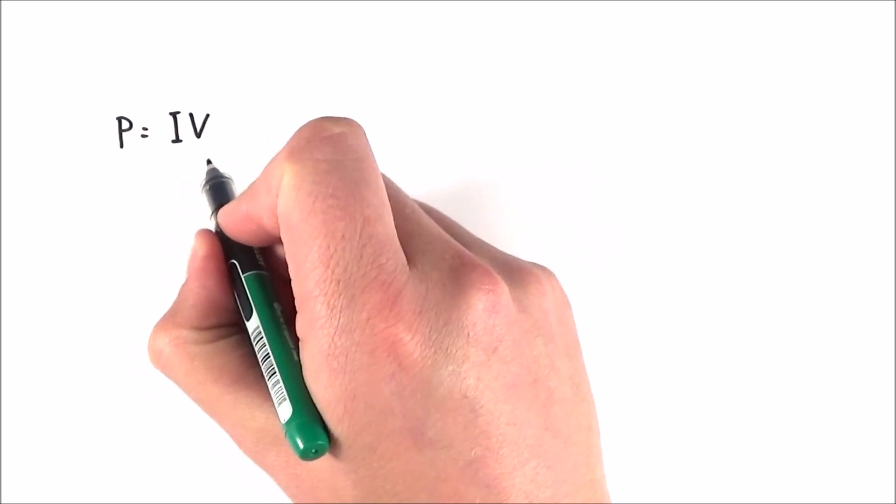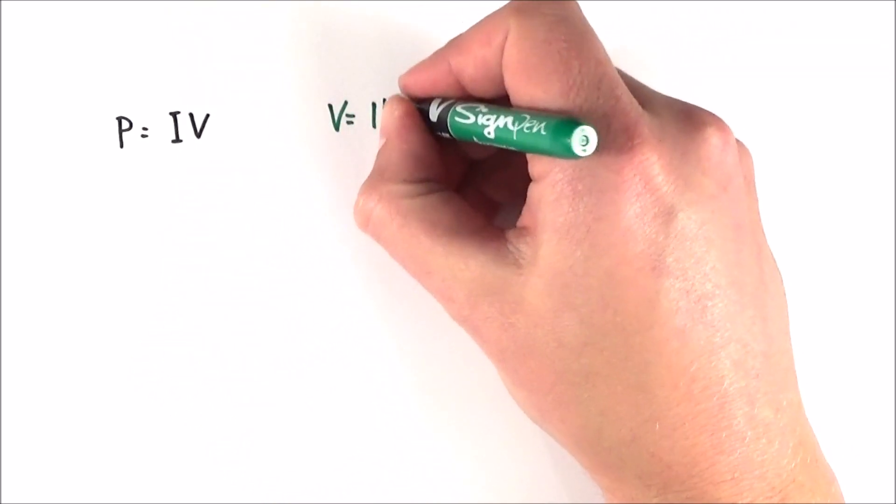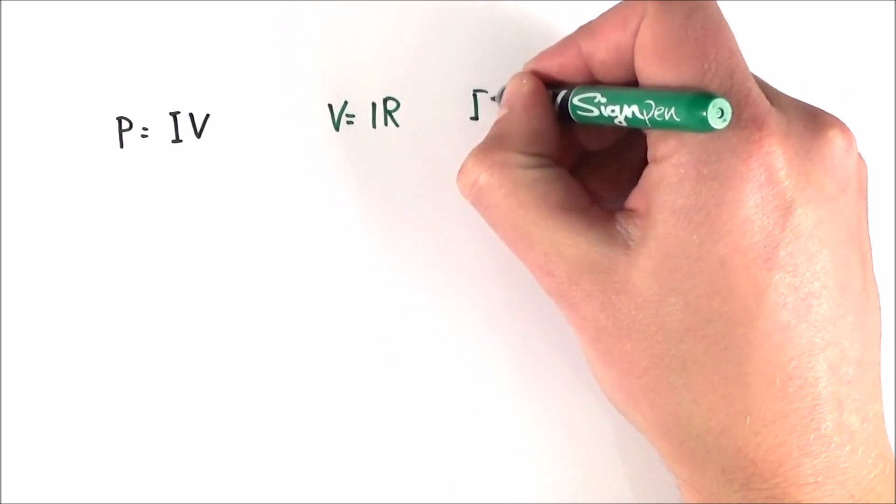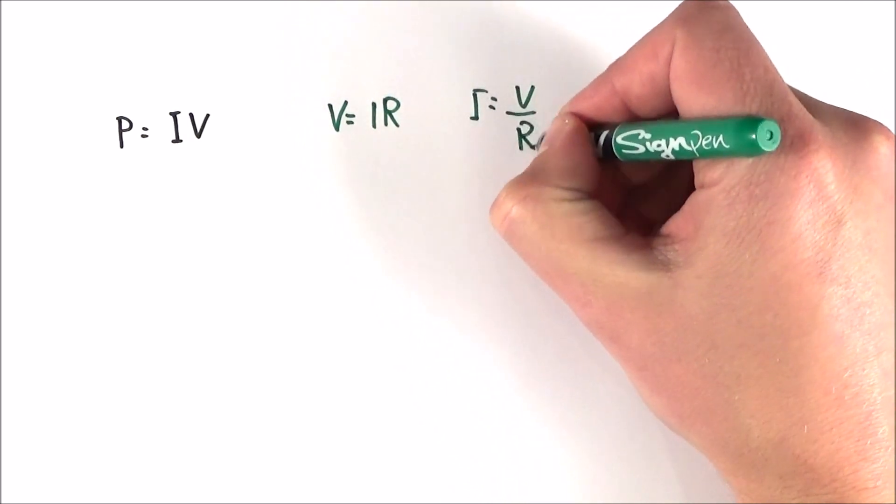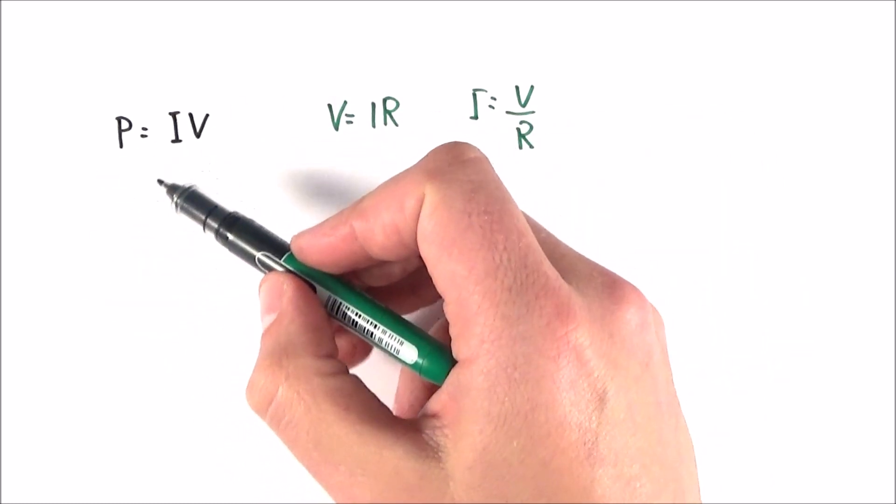So electrical power is equal to the current times potential difference. But there's another equation that says V is equal to I times R, or I is equal to V divided by R. Now, what we can do is we can use this equation and this one here, and we can come up with another couple of forms of this equation.